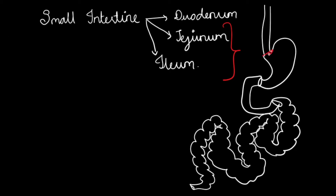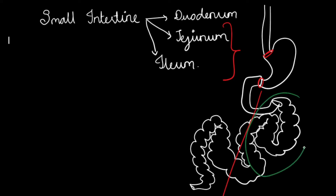From the pyloric end of the stomach, the duodenum arises, which has four parts and is the most fixed part of the small intestine. After that comes the jejunum and ileum, which is the most mobile part and is attached to the mesentery, so it is freely mobile. The jejunum forms the upper and left part of the small intestine, while the lower and right side of the abdomen is formed by the ileum. The small intestine is almost six meters long.